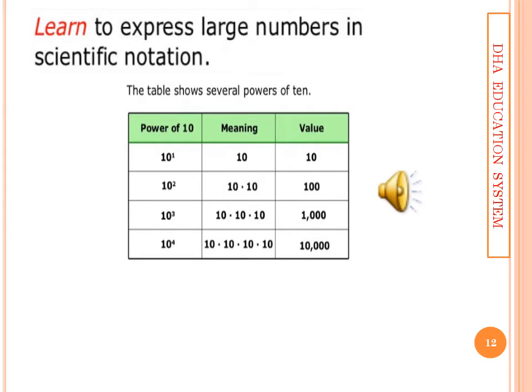Learn to express large numbers in scientific notation. The table shows several powers of 10. If your power 10 is 1, your value will be 10. If power 2, it will be double, 100. If power cube, it will be 1000. If power is 4, then it will become 10000. So in this way, you are increasing power, you are making the number large.